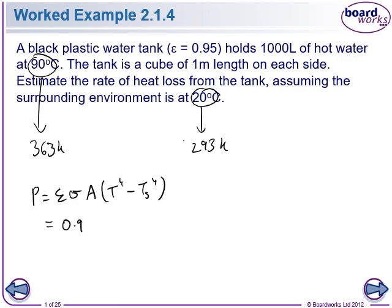So our emissivity is 0.95 multiplied by sigma which is 5.67 times 10 to the negative 8 multiplied by the surface area. Alright, what's the surface area of our tank? Very good, 6 metres squared. So each side is 1 metre. So we've got 6 sides, it must be a cube. So 6 is our area.